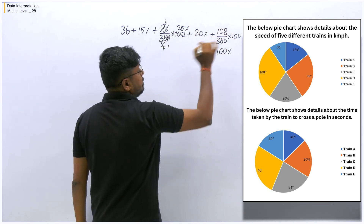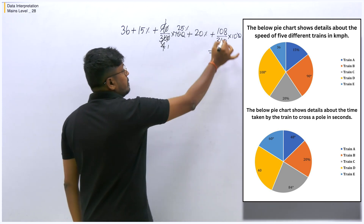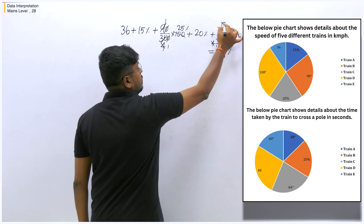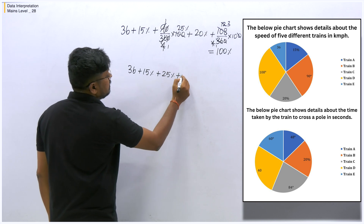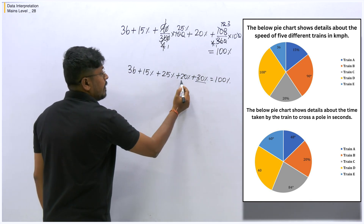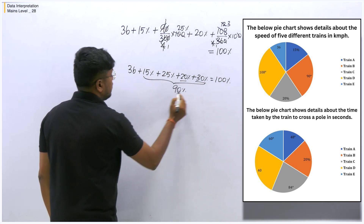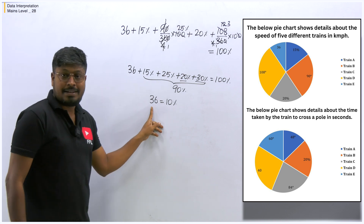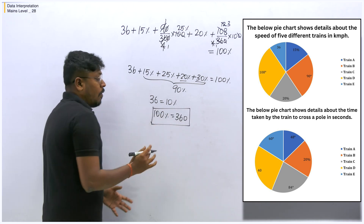Adding all the percentage values: 30 plus 20 is 50, plus 25 is 75, plus 15 is 90. So all values except the direct number 36 add up to 90%. Therefore 36 equals 10%, which means 100% equals 360. So the total speed of all 5 trains is 360 kilometers per hour.